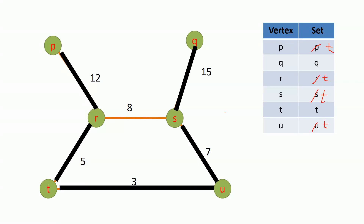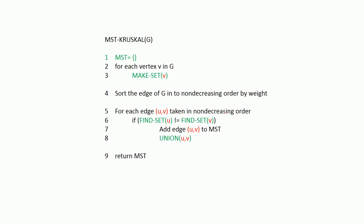Now I have given you the strategy that we are going to follow here. Let me show you the proper pseudocode for Kruskal's algorithm. Initially we have set our MST set to empty and then we are going to construct that table which contains the vertices and the current set that those vertices belong to by calling the make_set function for each vertex.